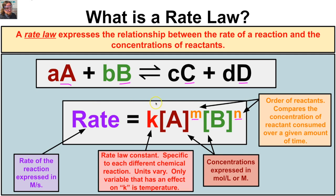In this video, we're going to focus our attention on K. K is the rate constant, and it is different for every single chemical reaction. K is specific to each different chemical equation, and the units for K are going to vary as we will learn. The only variable that has an effect on K is temperature — if you change the temperature of the system, the K value is going to change. To get the rate of a chemical reaction, you take the concentrations of each reactant raised to some power, then multiply by the rate constant K.